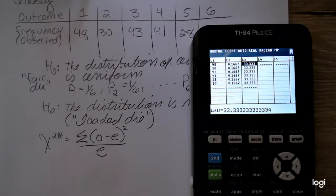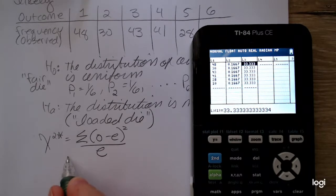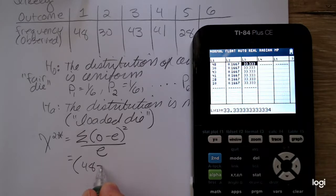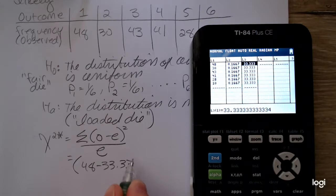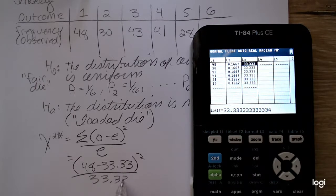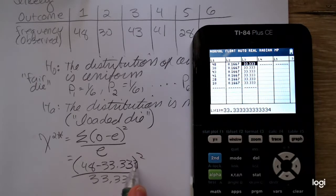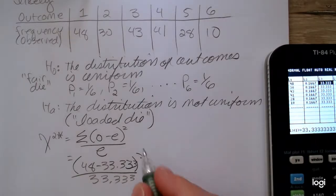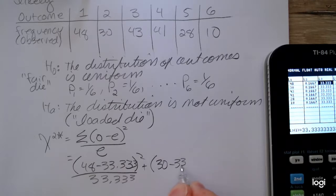If you wanted to do that by hand, for each category, it's going to be 48 minus 33.333 squared over 33.333. That's for the first outcome, and then you have to do it for the second outcome.